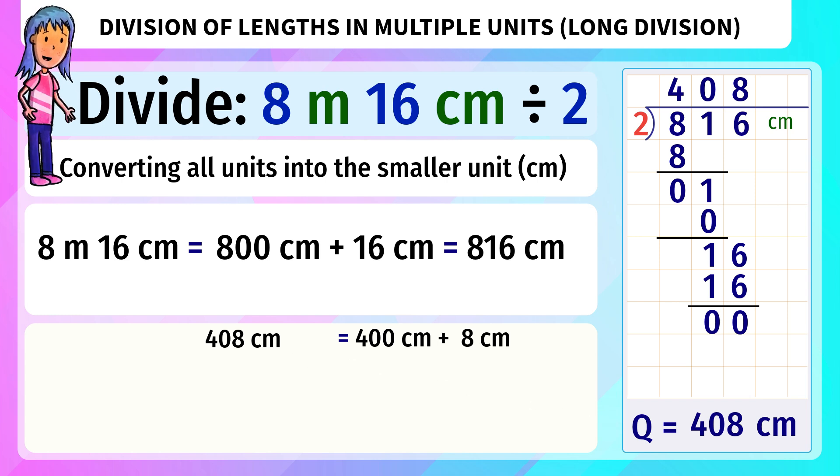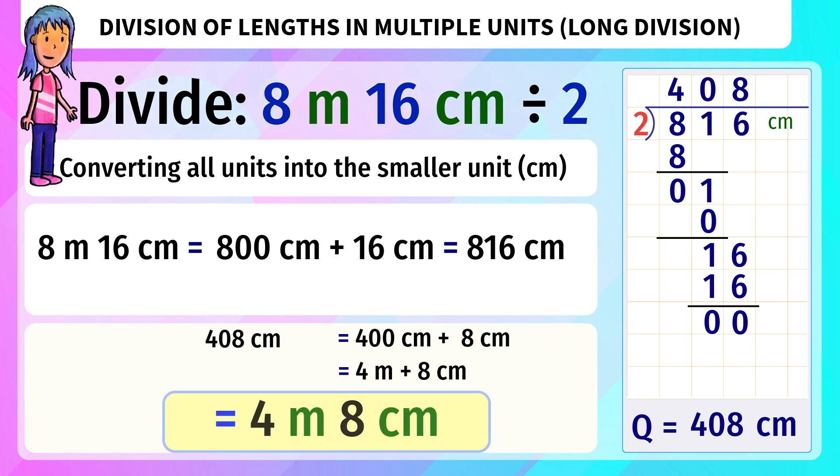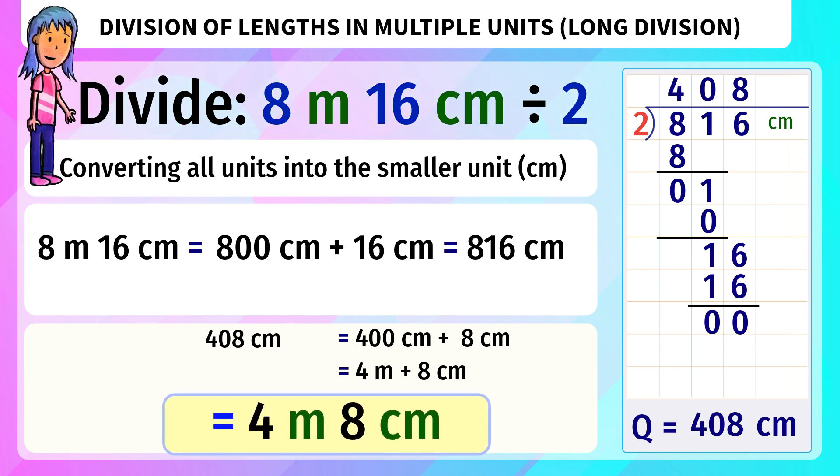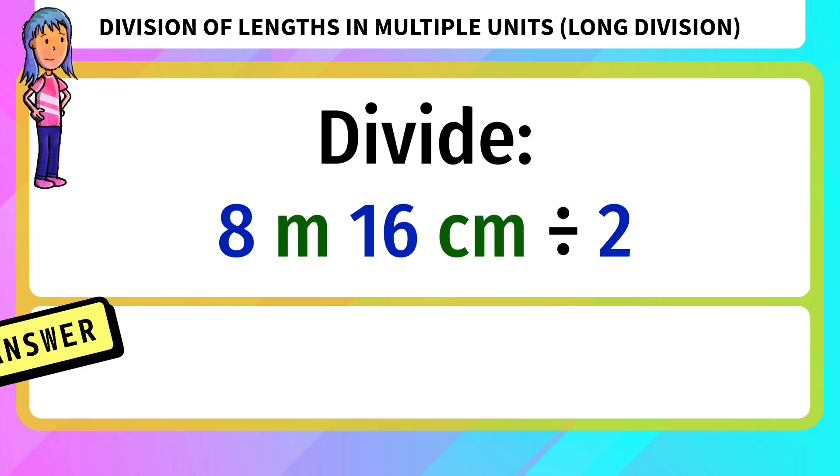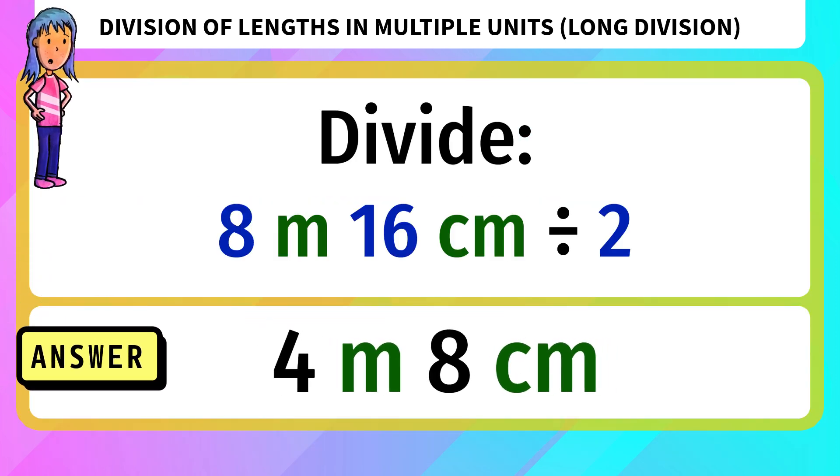408 centimeters equals 400 centimeters plus 8 centimeters, equals 4 meters plus 8 centimeters, equals 4 meters 8 centimeters. The answer is 4 meters 8 centimeters.